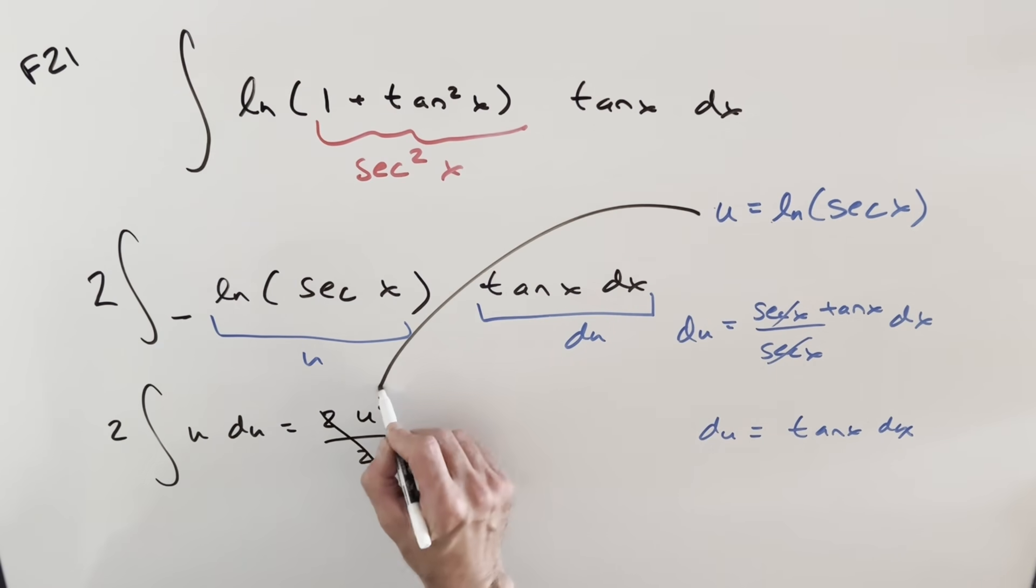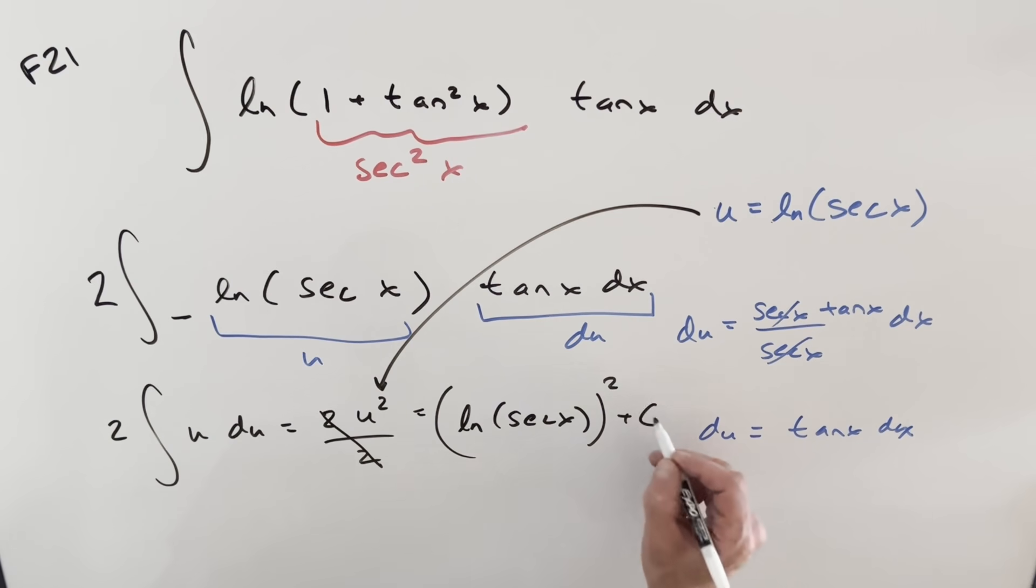Cancel that. Back substitute. And so what we're left with on this, this is just going to become natural log secant x all squared, add a plus c, and that's it.